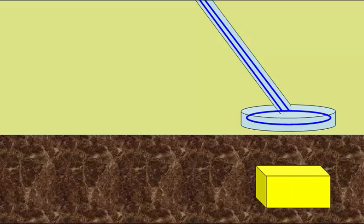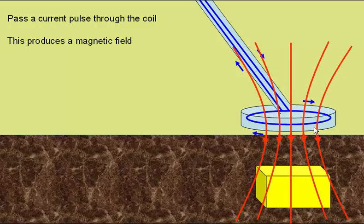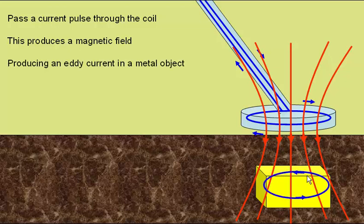First we pass a pulse of current through the coil. This will be a very brief pulse and will produce a magnetic field, the magnetic field passing into the soil through the metallic object. This in itself will produce an eddy current within the metallic object.